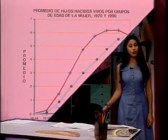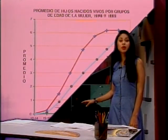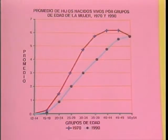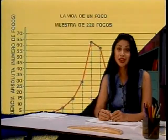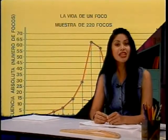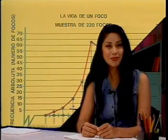En el programa solo vimos gráficas con un polígono de frecuencia, pero puede haber gráficas con más de un polígono. Por ejemplo, esta gráfica representa el promedio de hijos nacidos vivos por grupos de edad de las mujeres. Tenemos dos polígonos porque se están comparando los hijos nacidos vivos en 1970 y en 1990. Las mujeres de menos de 50 años redujeron el número de hijos en 1990 con respecto a 1970. Las mujeres entre 35 y 39 años fueron quienes más redujeron el número de hijos, con una diferencia de 1.8 hijos de 1970 a 1990. Al interpretar gráficas con dos polígonos de frecuencia, además de ver cómo se presentó la información en cada año, permite realizar comparaciones más fácilmente que si solo contamos con datos numéricos. Esperamos les sea de utilidad lo que vieron en esta sesión y los invitamos a las próximas emisiones.